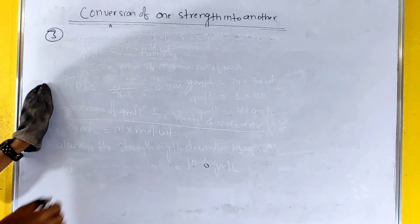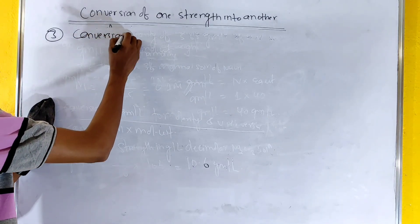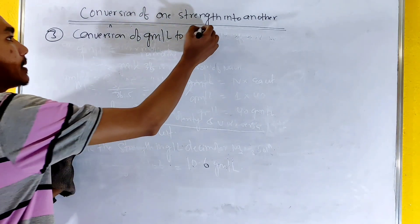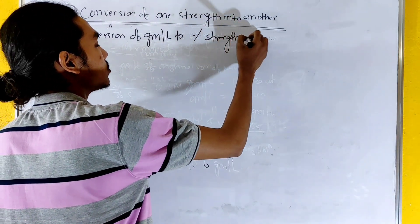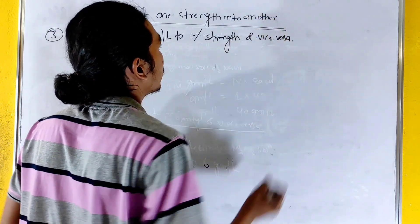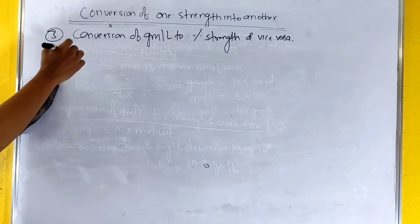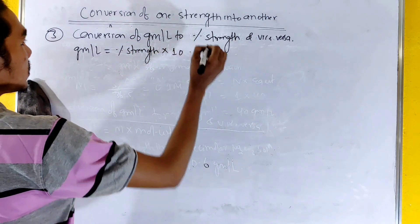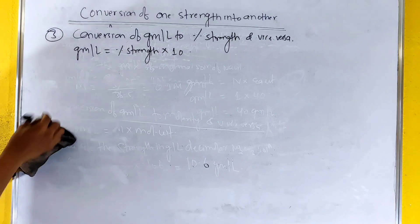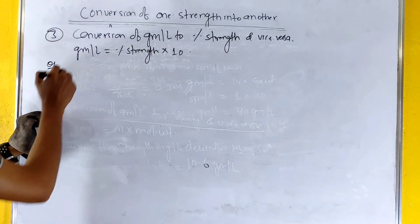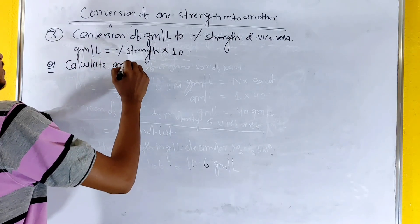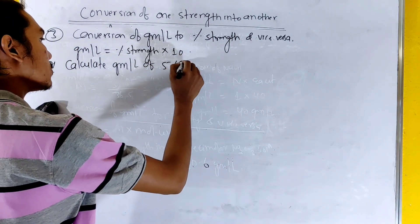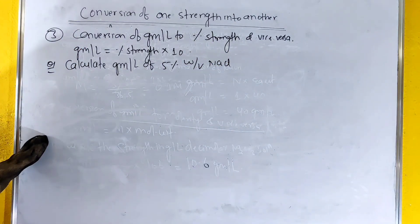Number 3 — conversion of gram per liter to percentage strength and vice versa. The formula is: gram per liter equals percentage strength into 10. Calculate the gram per liter of 5% w/v NaCl solution.